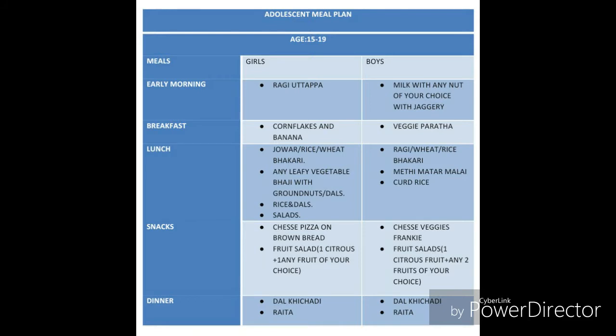Here is a meal plan for adolescent girls and boys, following a five-meal pattern. For early morning, we have suggested ragi uttappa for girls and milk with nuts and jaggery for boys. For breakfast, corn flakes and poha for girls, and veggie paratha for boys — one can make paratha with multigrain flour or flour of your choice. For lunch, we have suggested any kind of bhakri or chapati, leafy vegetable bhaji with groundnuts, rice and dal, and salad for girls, and one can substitute veggie bhaji with fish or chicken curry. For boys, any kind of bhakri with methi matar malai bhaji and curd rice, and for a non-vegetarian option, one can substitute with malai chicken curry. For snacks, cheese pizza on brown bread, and for a non-vegetarian option, one can make pizza with chicken.